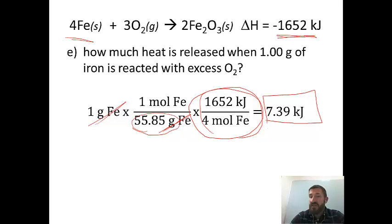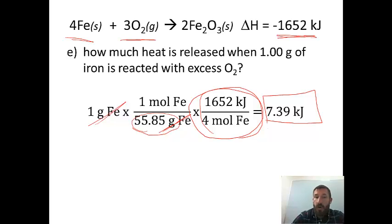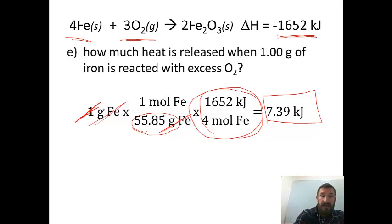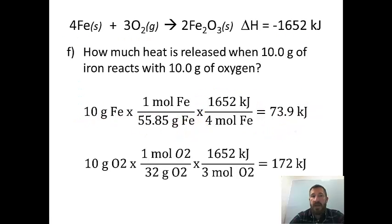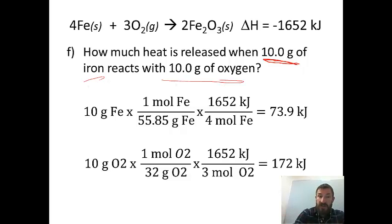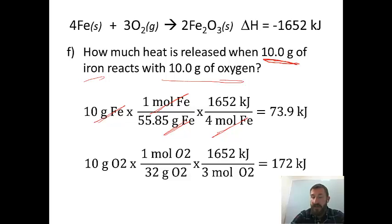Now for question F, instead of just iron with excess oxygen, I'm giving you 10 grams of iron and 10 grams of oxygen — this is a limiting reactant problem. For iron: 10 grams of iron, grams cancel using the molar mass (55.85), moles cancel using the ratio from the balanced equation. The calculation is 10 ÷ 55.85 × 1,652 ÷ 4, which gives us 73.9 kilojoules.